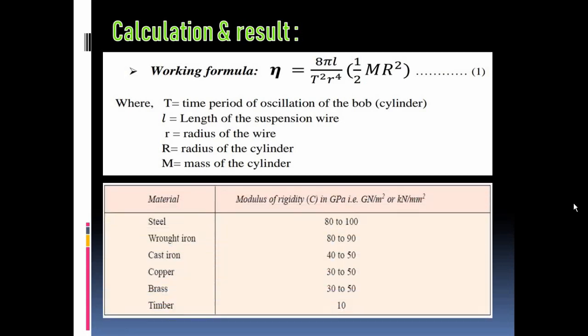The standard values for different materials of shear modulus is given in this chart. You can see, for steel it is 80 to 100 kN per mm², for wrought iron it is 80 to 90, for cast iron it is 40 to 50, and for copper, brass and timber, the values are given in the table.